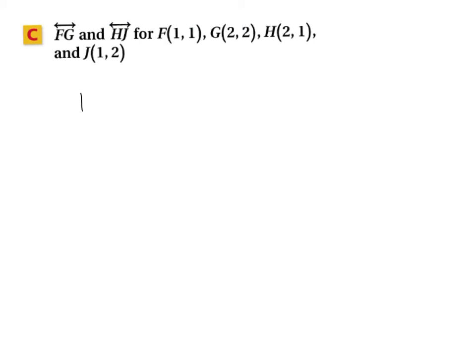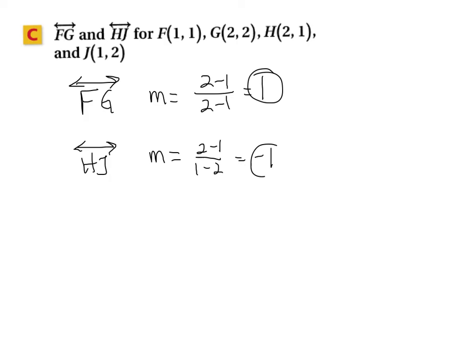And our last one, we want to find the slopes of lines FG and HJ. So, line FG. That would be 2 minus 1 and 2 minus 1. That gives me a slope of 1. Then, we would get 2 minus 1 and 1 minus 2. That gives me negative 1. Since these are opposite reciprocals and they have a product of negative 1, these are perpendicular.